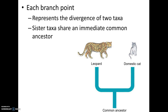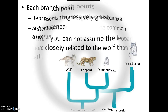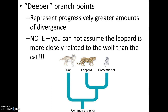A branch shows where organisms diverge from a common ancestor and split. For example, the cat and the leopard share a common ancestor. Further back, the wolf also shares an ancestor, but it's further back. The cat and the leopard could be flip-flopped — it wouldn't change their relationship to each other, or their relationship to the wolf if the cat had been written on the left and the leopard on the right.